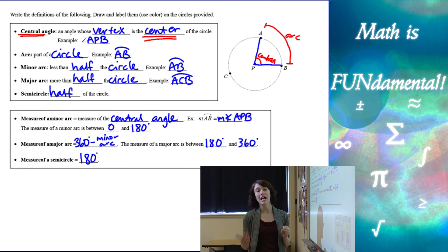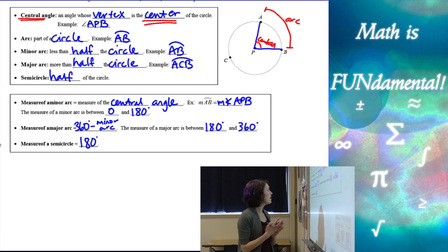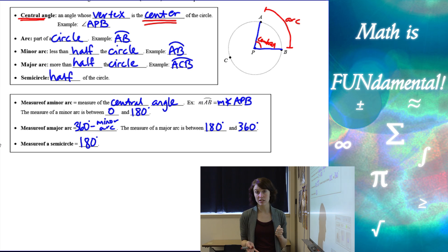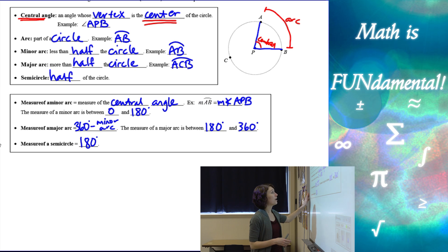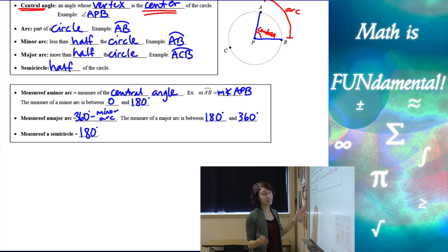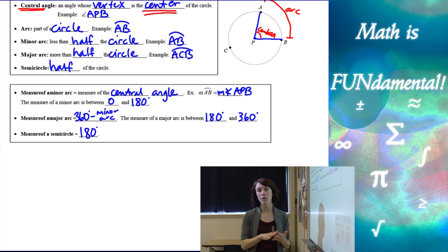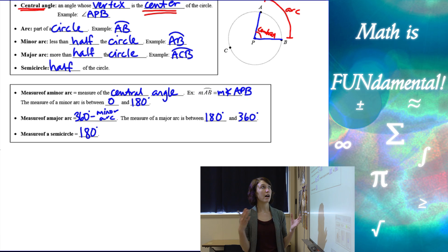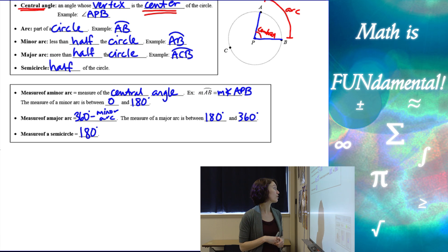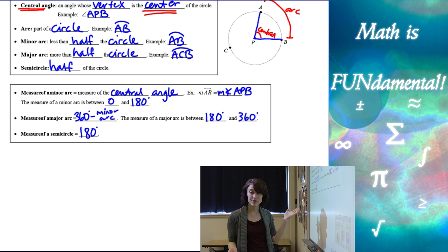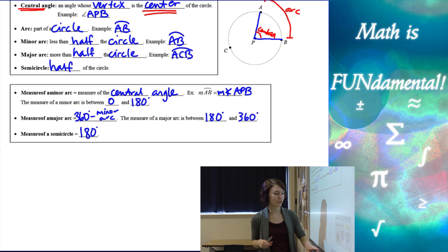A semicircle is exactly half of the circle. The measure of a minor arc is equal to its central angle — arcs measure in degrees just like angles. The measure of a minor arc is always between 0 and 180. The measure of a major arc is always between 180 and 360. You can take 360 minus the minor arc to get the major arc. And the measure of a semicircle is exactly 180 degrees.